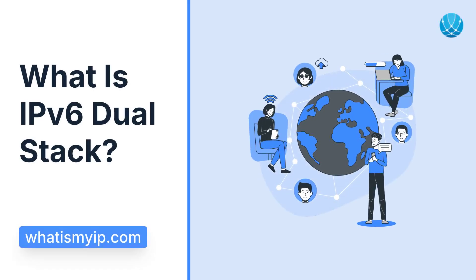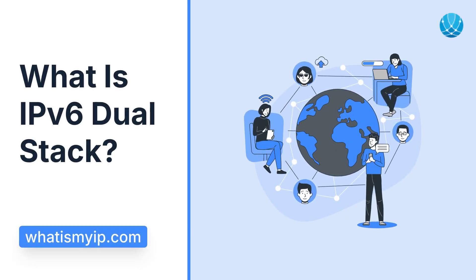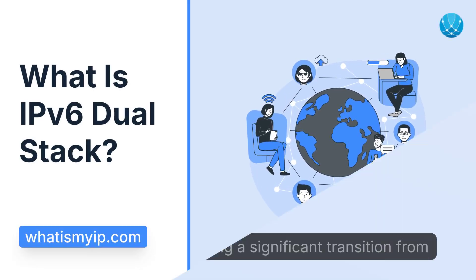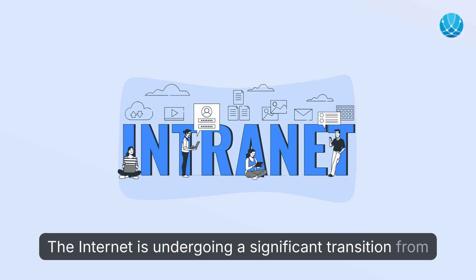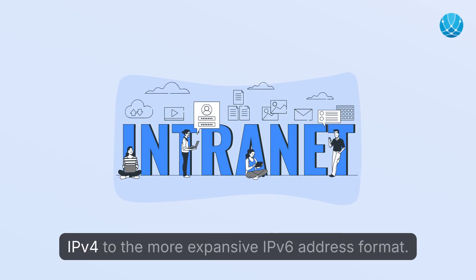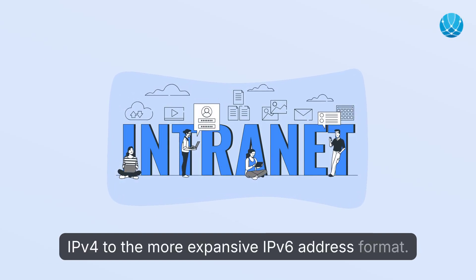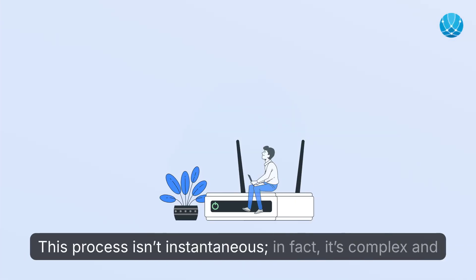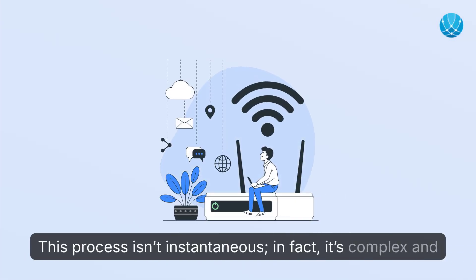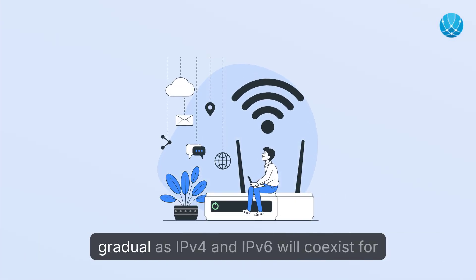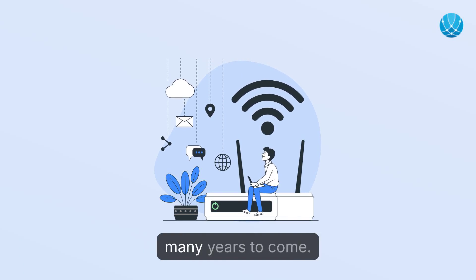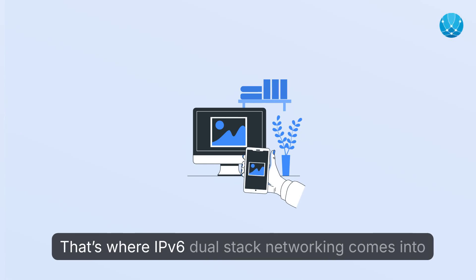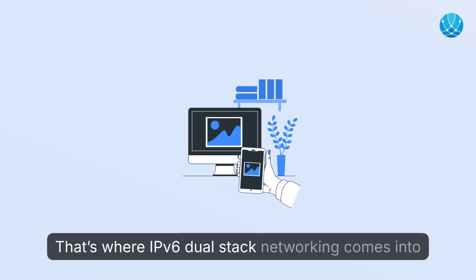What is IPv6 Dual Stack? The internet is undergoing a significant transition from IPv4 to the more expansive IPv6 address format. This process isn't instantaneous — in fact, it's complex and gradual, as IPv4 and IPv6 will coexist for many years to come. That's where IPv6 Dual Stack networking comes into play.